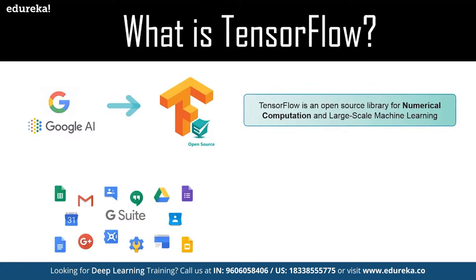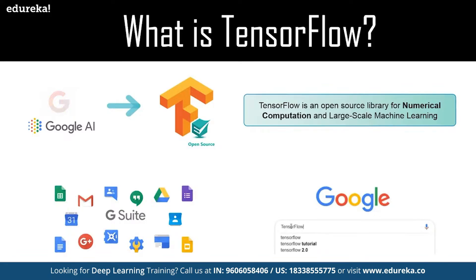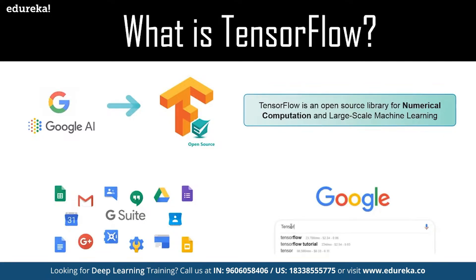Google uses machine learning in all of its products to improve the search engine, translation, image captioning, and recommendations. For example, Google users can experience a faster and more refined search with artificial intelligence — if the user types a keyword in the search bar, Google provides a recommendation about what the next word could be.